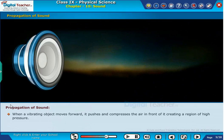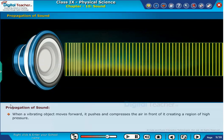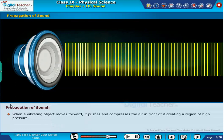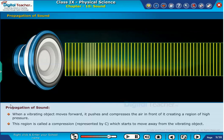When a vibrating object moves forward, it pushes and compresses the air in front of it, creating a region of high pressure. This region is called a compression, represented by C, which starts to move away from the vibrating object.